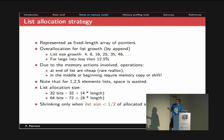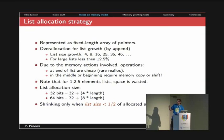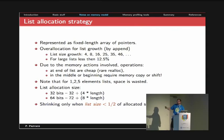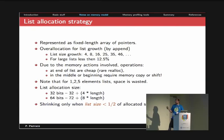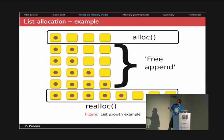Lists in Python are represented as fixed-length arrays of pointers. By design they over-allocate — at the beginning by a higher percentage, but for large lists this percentage decreases. Appending to the end is cheap, but inserting in the middle or beginning requires copying or shifting memory. It's worth noting that for lists of one, two, or five elements, we waste a lot of space — so if we have a large number of small lists, we will have to over-allocate for more elements.